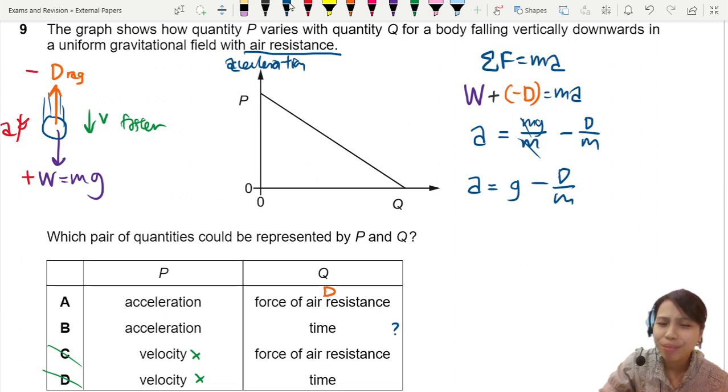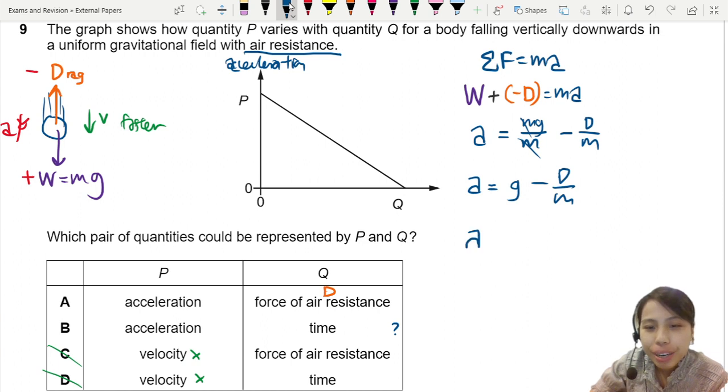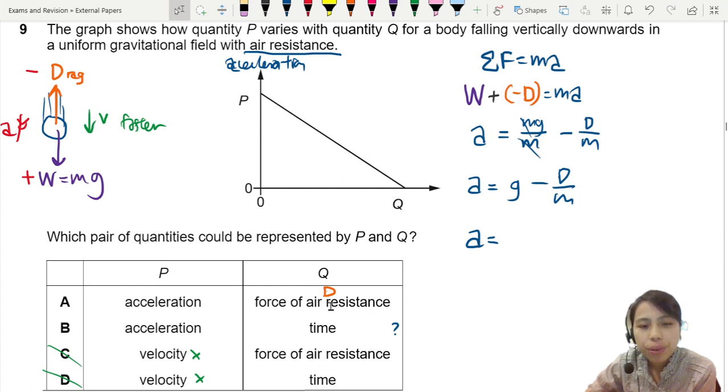I think we have our answer. Can you see it? If not, let's go one more step. So let's rearrange A. Express for A because A is on our y-axis. What's on our x-axis? Force of air resistance, D. Okay, let's try this. Negative 1 over m times D plus g.